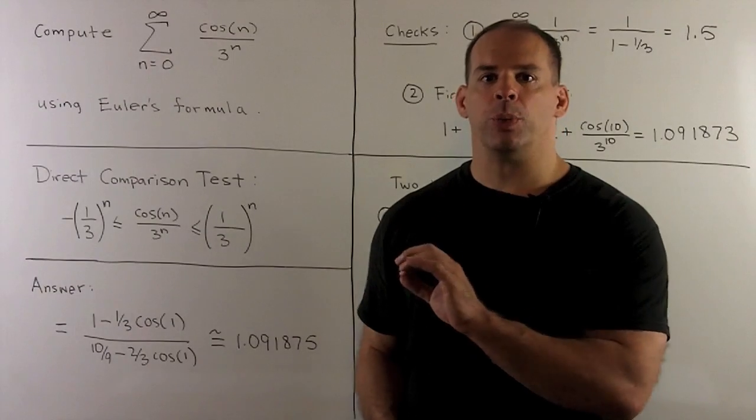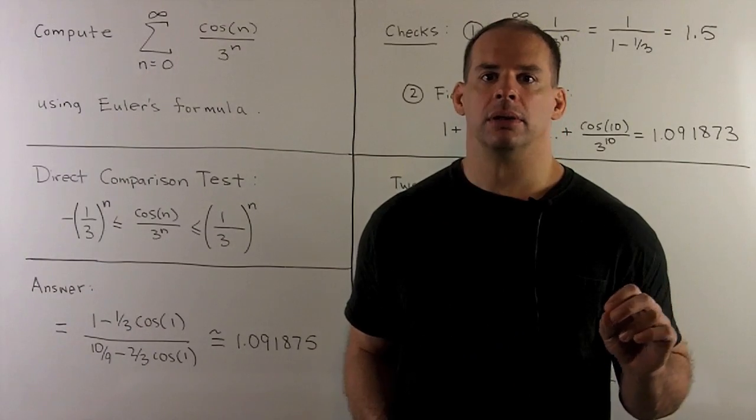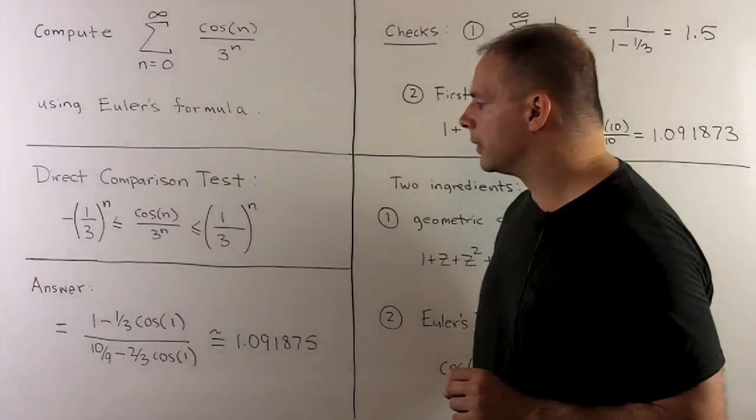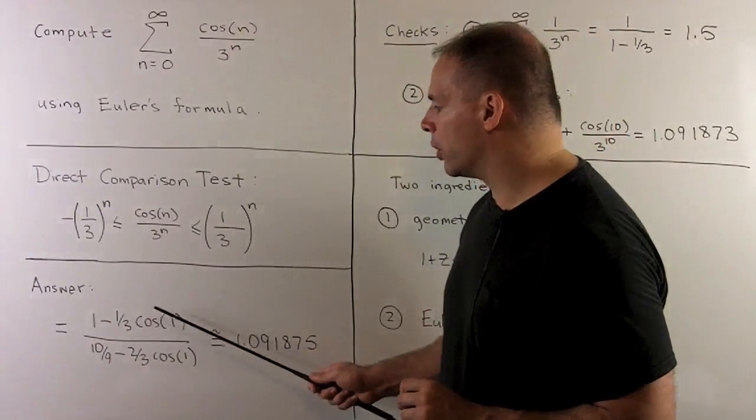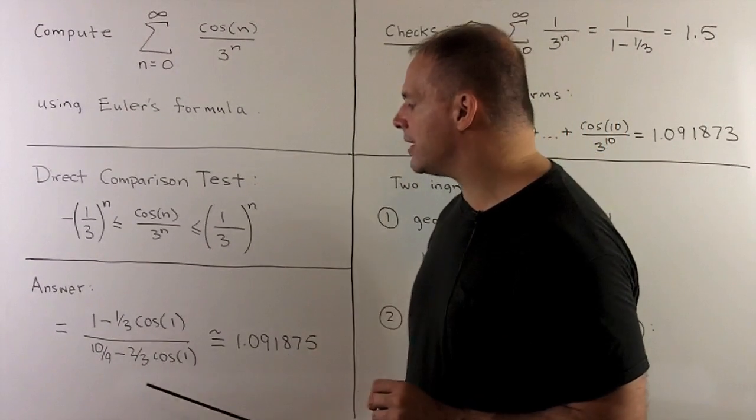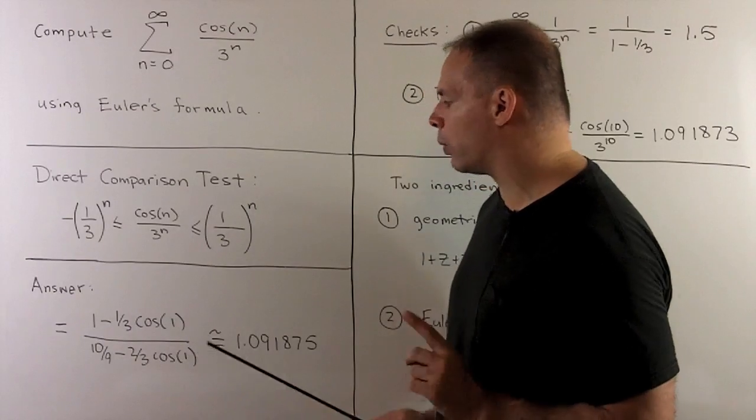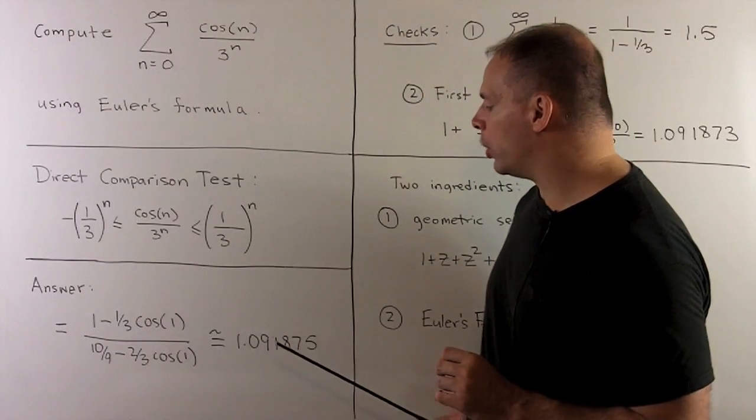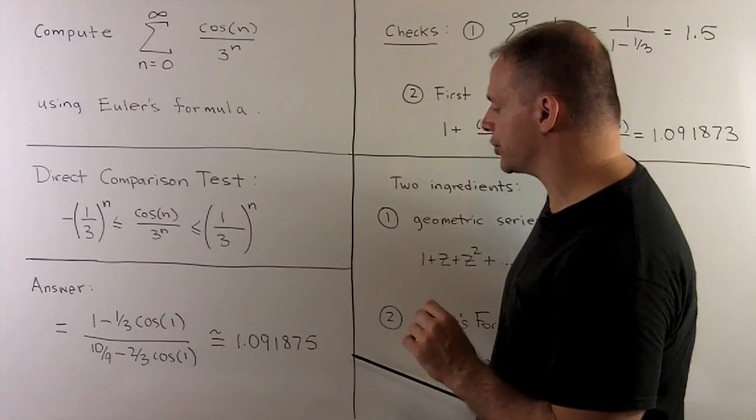Now, because it converges, we can talk about the sum. Precise answer for the sum, which we'll see in a bit, it's going to be 1 minus 1 third cosine of 1 over 10 ninths minus 2 thirds cosine of 1. If we put that through a calculator, we'll have 1.091875, and so on.